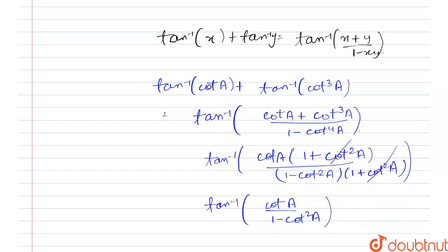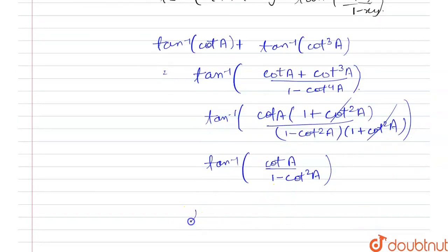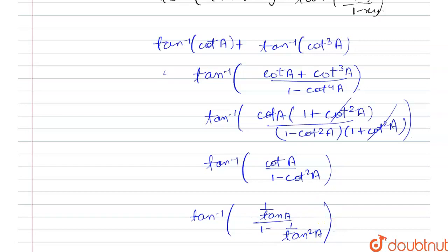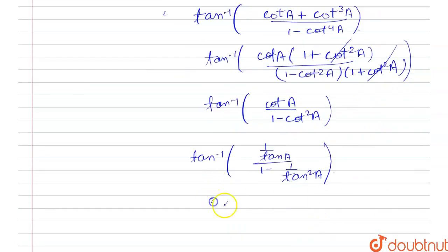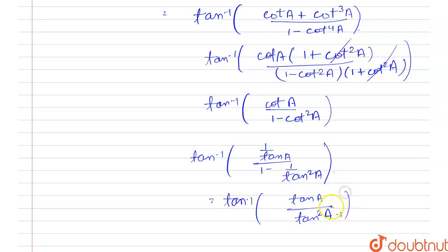Since cot a equals 1/tan a, we substitute to get tan inverse of (1/tan a) divided by (1 − 1/tan²a). Simplifying further, this becomes tan inverse of tan a divided by (tan²a − 1). We then multiply and divide by 2, and take −1 as a common factor from the denominator.